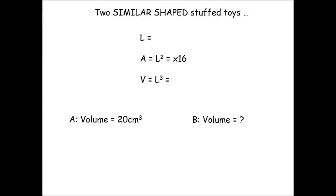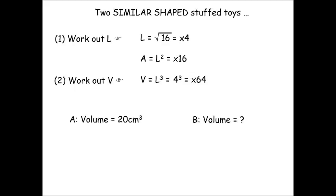So, as always, use the LAV. Write down LAV and fill in what you know. Area scale factor is times 16. Work out the length scale factor first and use it to find any other scale factors you need. The square root of 16 is 4, so the length scale factor is times 4. Now we can work out the missing volume scale factor, which is 4 cubed or times 64.